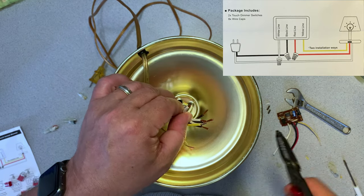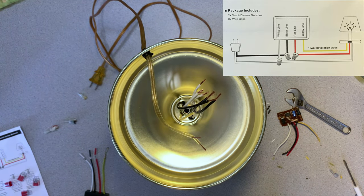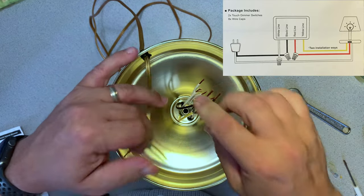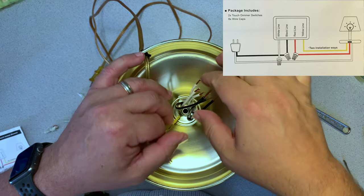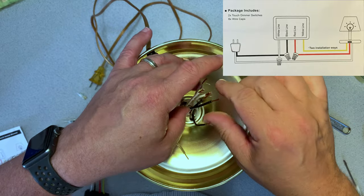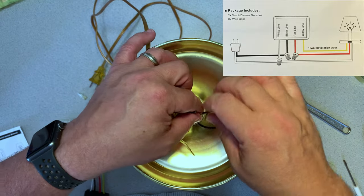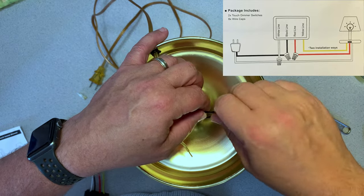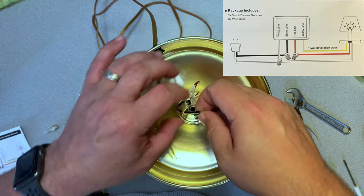Once I have all the wires stripped, I'm going to make sure I've got plenty of room to work with the wires and give them just a little bit of a twist just to make sure that they're staying together. These are made up of a bunch of little wires on the inside, but I'm just trying to keep them together.